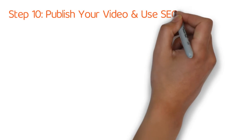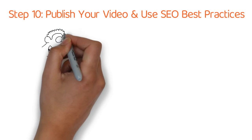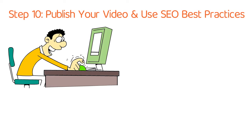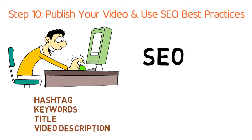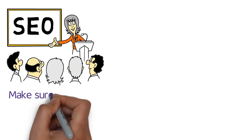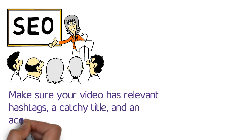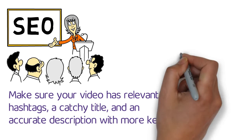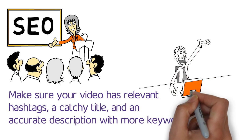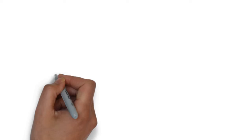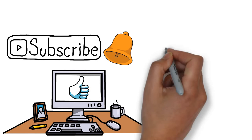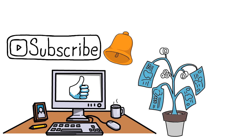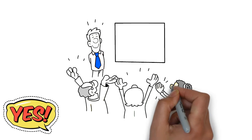Step 10. Publish your video and use SEO best practices. You are basically getting free exposure when you optimize your hashtags, keywords, title, and video description. So always use SEO best practices when publishing your video. Make sure your video has relevant hashtags, a catchy title, and an accurate description with more keywords. After that, you can publish your video during your preferred platform's most optimal posting times. Before I move on to step number 11, please give this video a thumbs up, subscribe, and click the bell. That way, you'll be the first to see my next money-making video. Also, type the word YES down in the comments below if you are going to start using video marketing to grow your business today.